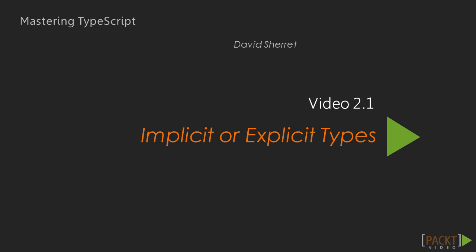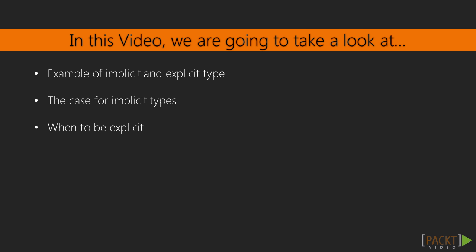While writing the sample application, some decisions had to be made about when to explicitly define a type. In this video, we're going to look at how we can decide between implicit or explicit types. First, we'll make sure we understand what we mean by implicit and explicit types. Second, we'll look at the case for using implicit types when able. And finally, when we should be explicit instead of implicit.